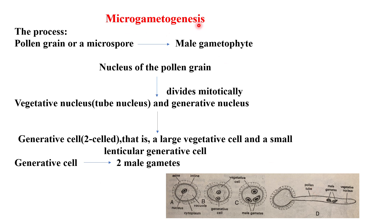Now we will see how microgametogenesis takes place — how the pollen grain or microspore gives rise to the male gametophyte. The nucleus of the pollen grain divides mitotically to form the vegetative nucleus (tube nucleus) and the generative nucleus. This is the two-cell stage. The generative cell further divides into a large vegetative cell and a small lenticular generative cell.